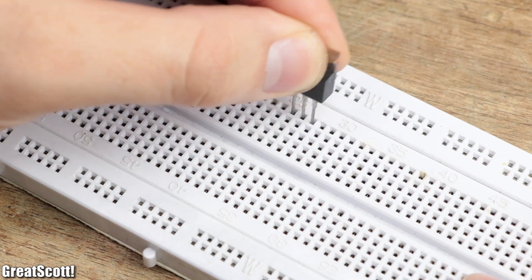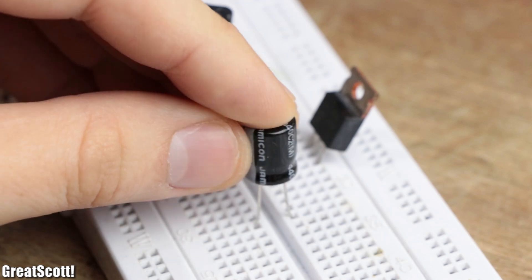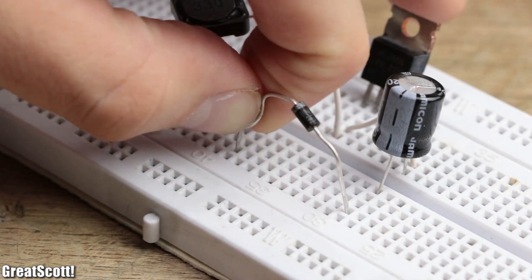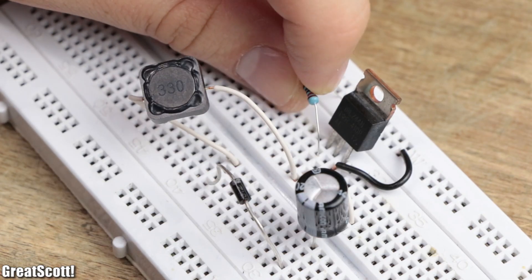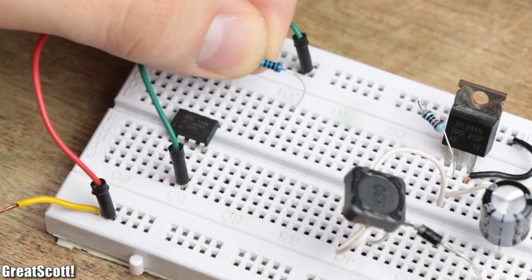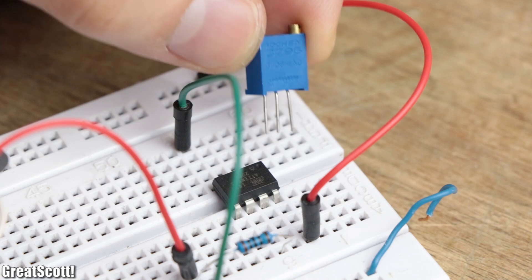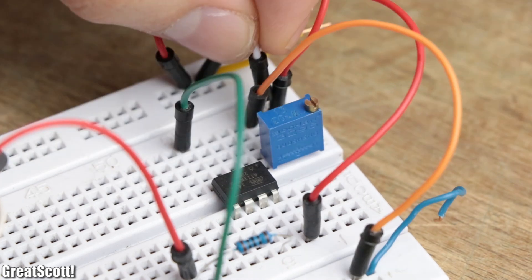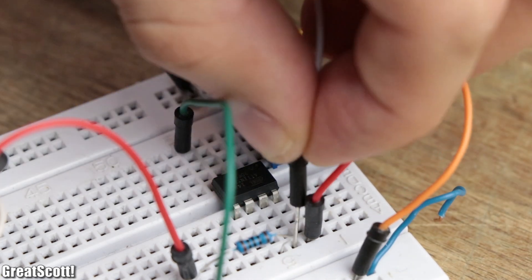After building up the circuit on a breadboard, all that was missing was a square wave signal with variable duty cycle for the MOSFET switch. For that, I used an ATtiny85, which outputs the required signal on pin 6 with variable duty cycle according to the position of a potentiometer on pin 7.